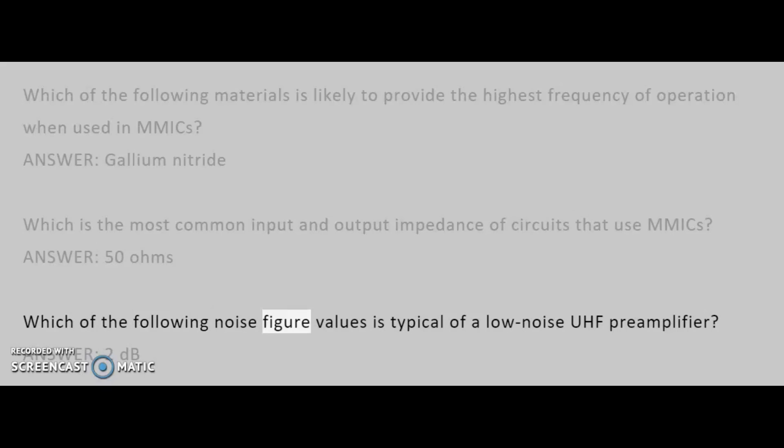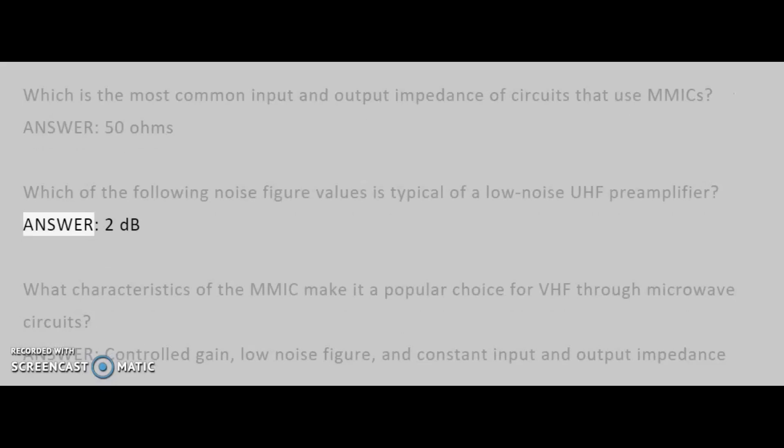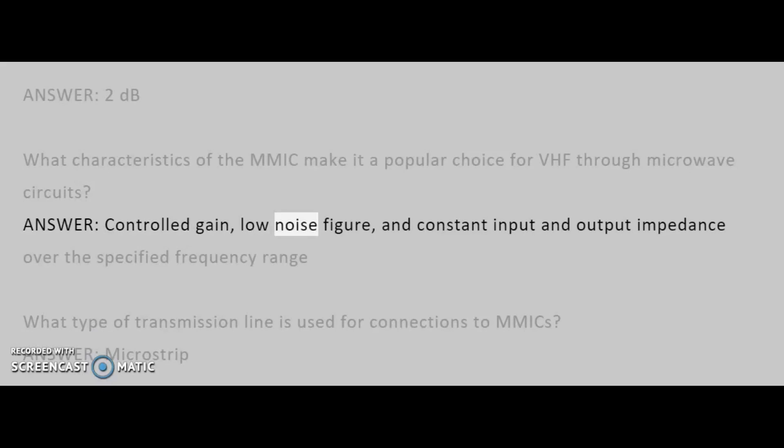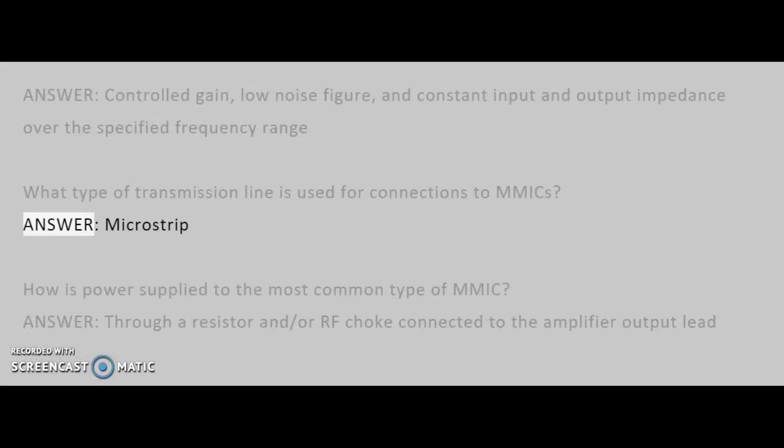Which of the following noise figure values is typical of a low-noise UHF preamplifier? Answer: 2 dB. What characteristics of the MMIC make it a popular choice for VHF through microwave circuits? Answer: controlled gain, low noise figure, and constant input and output impedance over the specified frequency range. What type of transmission line is used for connections to mics? Answer: microstrip. How is power supplied to the most common type of MMIC? Answer: through a resistor and or RF choke connected to the amplifier output lead.